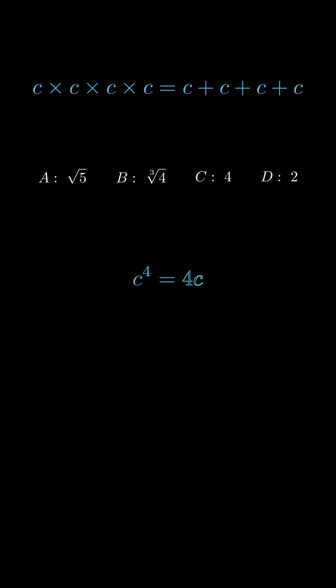So the equation is C to the 4th equals 4C. Move everything to one side. C to the 4 minus 4C equals 0. Now, factor out a C. That gives C times C cubed minus 4 equals 0.